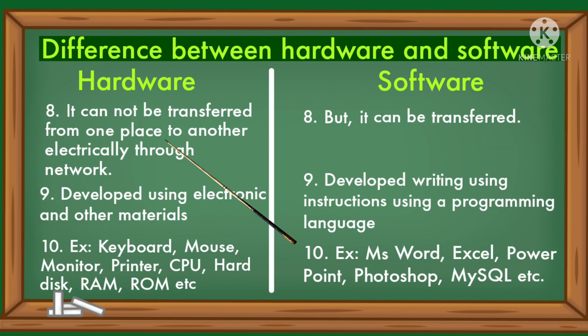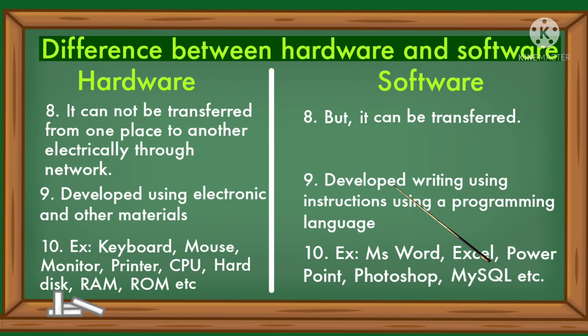Hardware cannot be transferred from one place to another electrically through a network, but it can be transferred physically. Hardware is developed using electronic and other materials. Software is developed by writing instructions using a programming language.